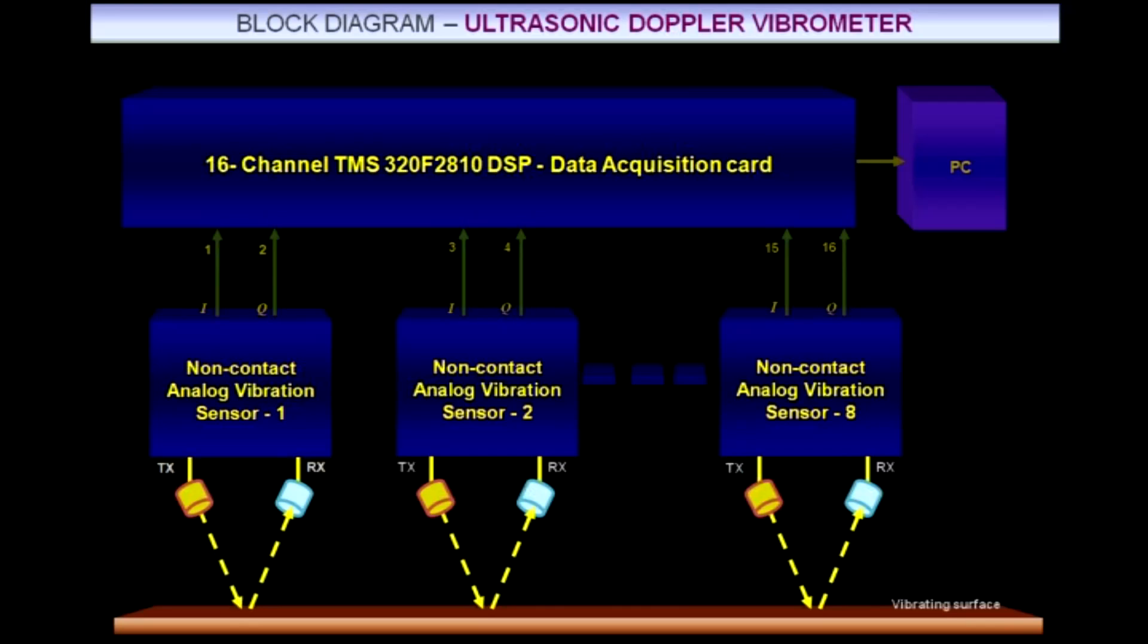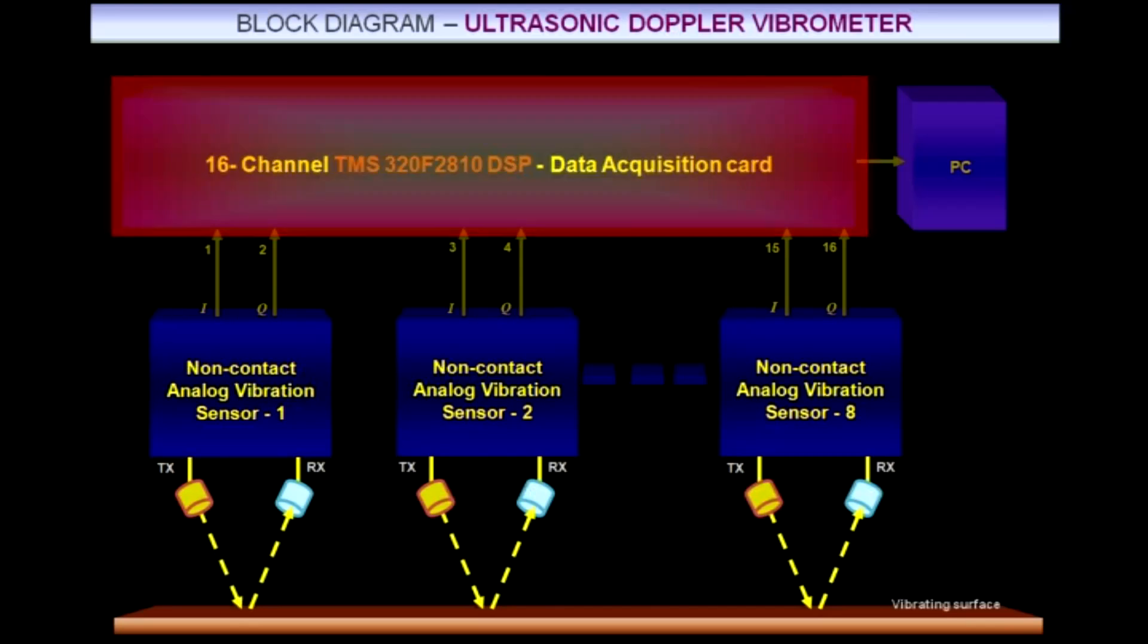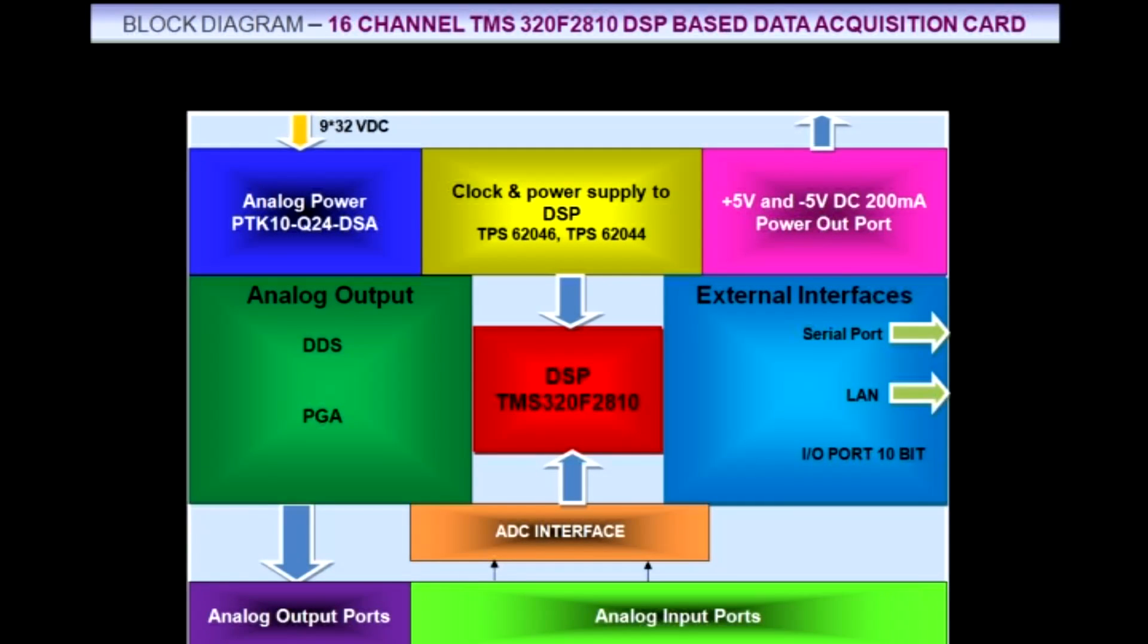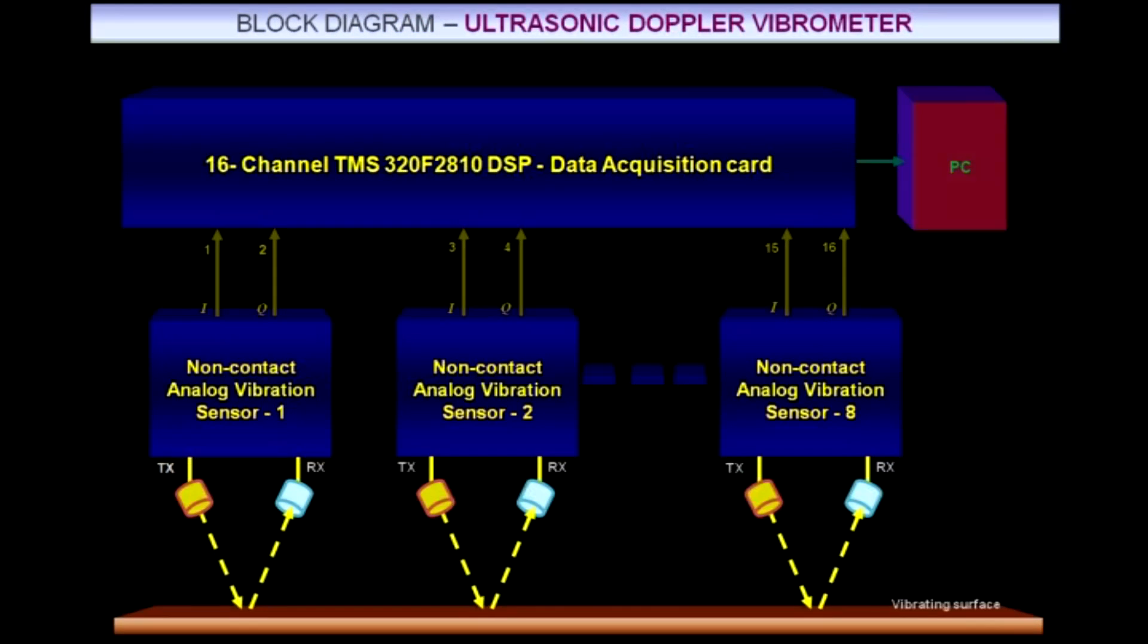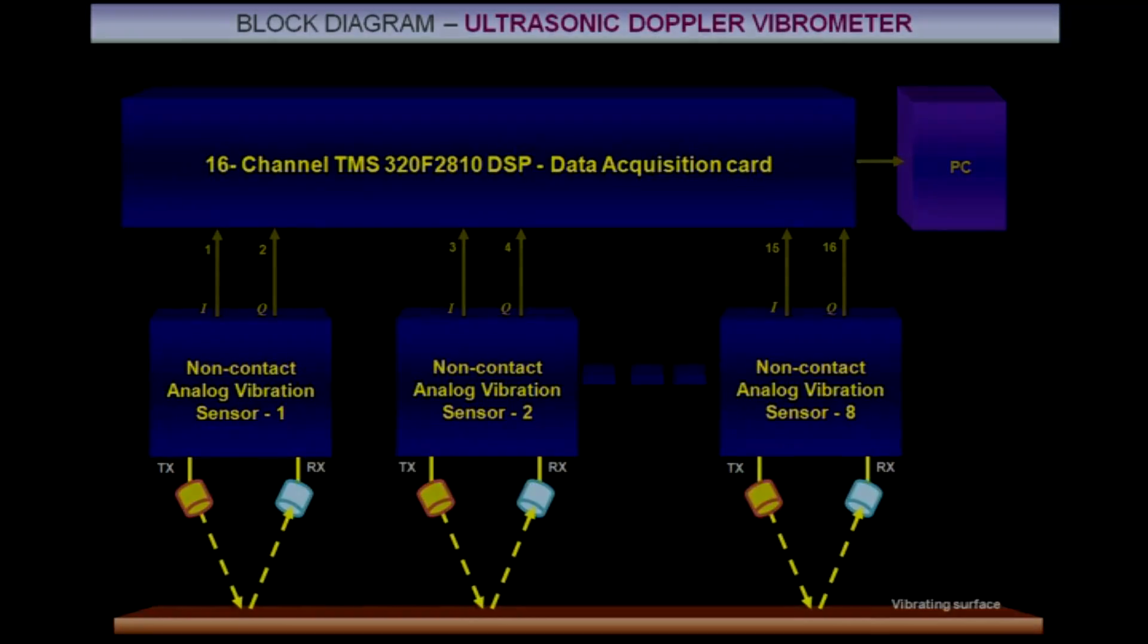This signal is sent to TMS320F2810 based data acquisition card. All 16 ADC channels of TMS320F2810 are used for the digitization of analog signals. After filtering and FFT, data is sent to the PC through ethernet interface.